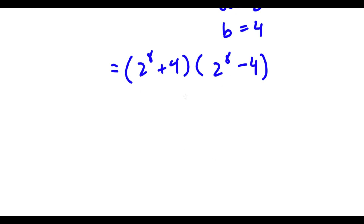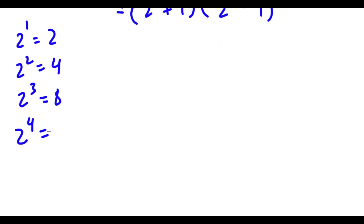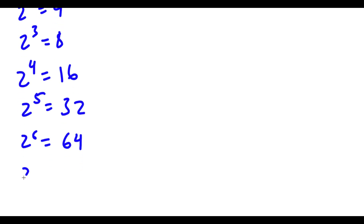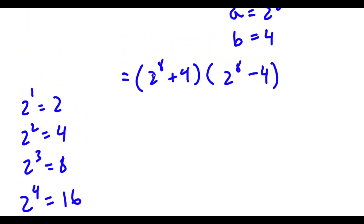Now let's go ahead and calculate this. 2 to the power of 8 — what would that be? Well, 2 to the power of 1 is 2, 2 to the power of 2 is 4, 2 to the power of 3 is 8. Notice how it doubles every time. So 2 to the power of 4 is double of 8, which is 16. 2 to the power of 5 is 32, 2 to the power of 6 is 64, 2 to the power of 7 is 128, and 2 to the power of 8 is double of 128, which is 256.